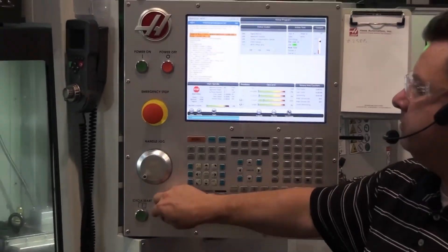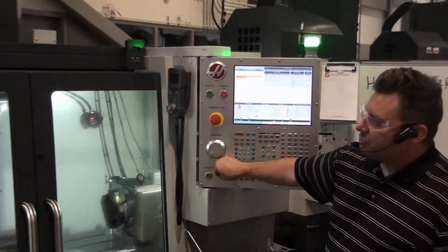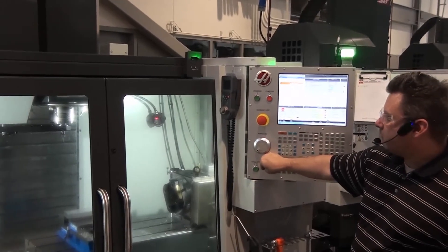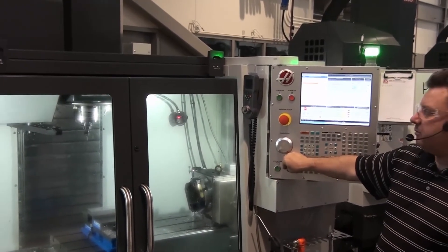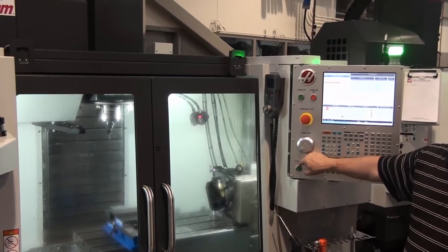In this case, it's tool two. So it grabs tool two, and you can see how much slower the machine moves.